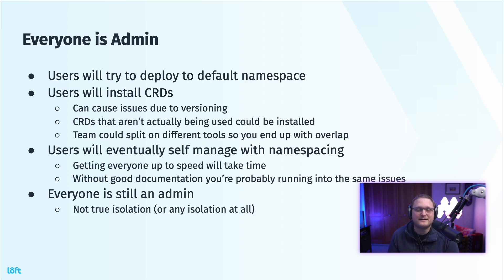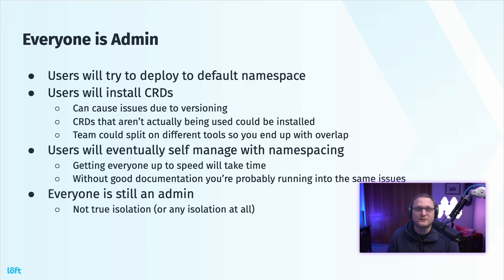First problem you're probably going to run into is users are going to try to deploy to the same namespace. Everyone's going to deploy to default because they're not going to create a namespace and deploy to that namespace. There are tools out there like Kubernetes and others that make this easier so that you can always be set to the same namespace. Users are going to install CRDs — it's going to happen — and it can cause issues due to versioning. CRDs that aren't actually being used could just be installed and sit around. Teams could split on different tools, so you end up with overlap of different tooling when you could be on the same thing, like Argo versus Flux. Users will eventually self-manage with namespacing, but getting everyone up to speed may take time. Without good documentation, you're probably running into the same issues over and over again. And everyone is probably still administrator, so it's not true isolation because they can see everything and access other people's resources. The biggest issue is making sure things don't get deleted that you don't want deleted.